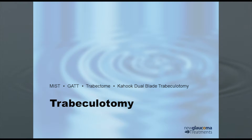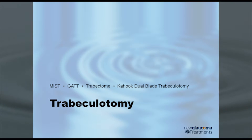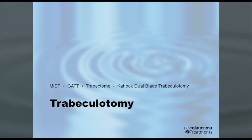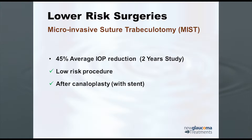It turns out that if you've had a patient who's had ab-externo canaloplasty, and at some point the pressure is no longer controlled if they've had this stent — if they've had the suture placed in the canal — you can go in with micro forceps or another instrument and pull the suture through.